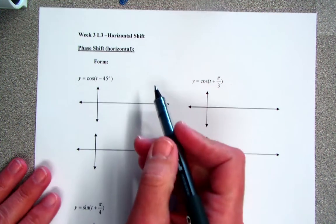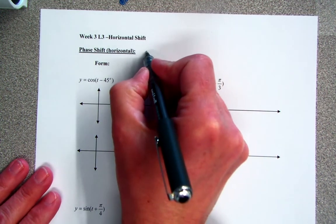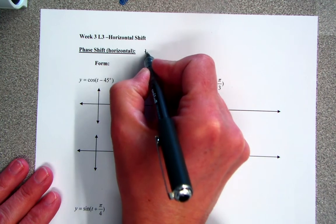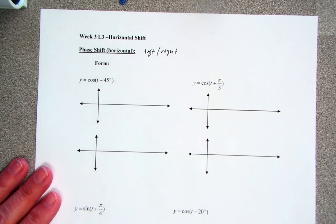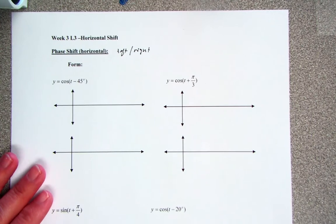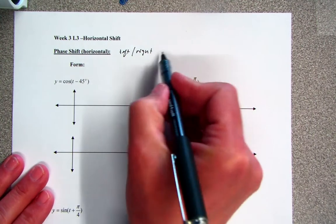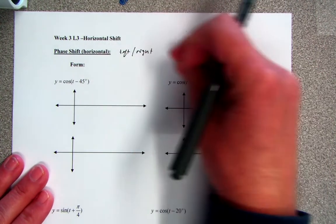This next move that we're going to take is we're going to move and just slide the whole graph left or right. So you did transformations in 108, so we're just doing the same transformations on trig functions. We're just going to literally pull or push it left and right.